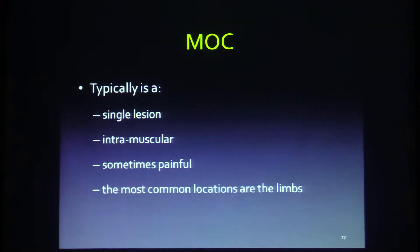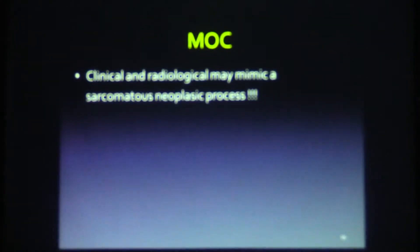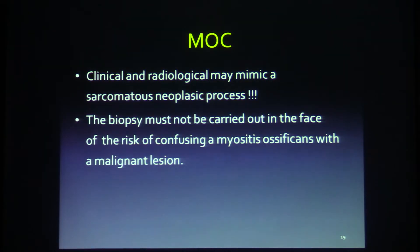Myositis ossificans circumscripta is typically a single lesion, intramuscular, sometimes painful. The most common locations are the limbs. The lesion is circumscribed, typically 3 to 6 cm. An essential characteristic is the rapid evolution, with the lesion reaching its maximum size in several weeks. The evolutionary duration is divided into three phases: early, intermediate and late. Clinically and radiologically it may mimic a sarcomatous neoplastic process. Biopsy must not be carried out due to the risk of confusing a myositis ossificans with a malignant lesion.